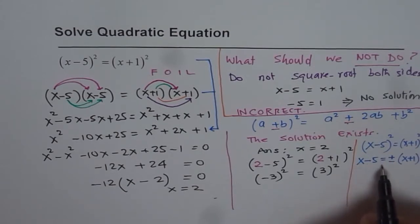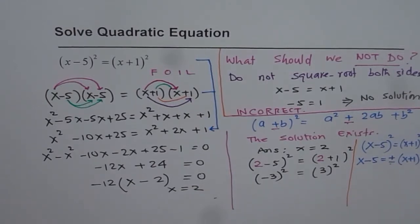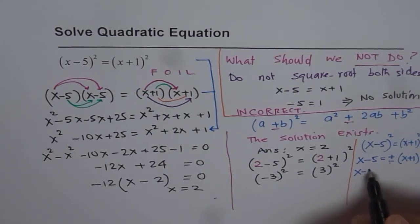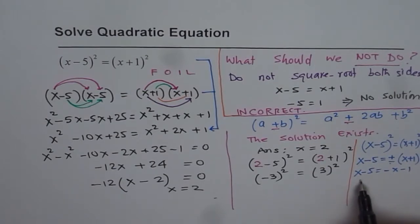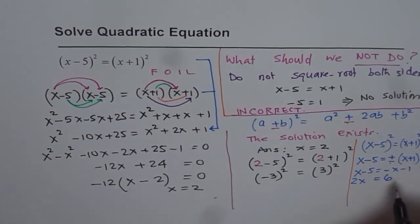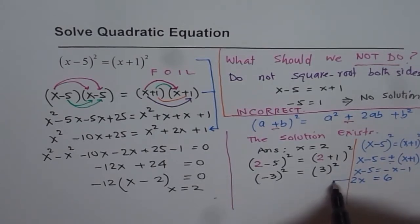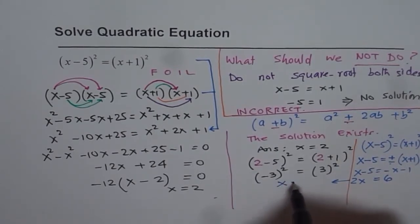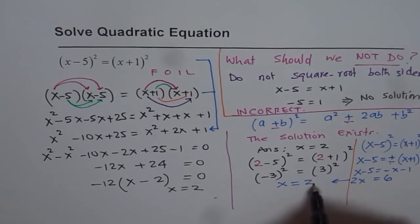If I have x minus 5 equals minus of x plus 1, then x minus 5 equals minus x minus 1. Now you can see the solution. When you bring it here, we have 2x equals 6 and that gives you the answer, which is x equals 6 divided by 2, which is 3.